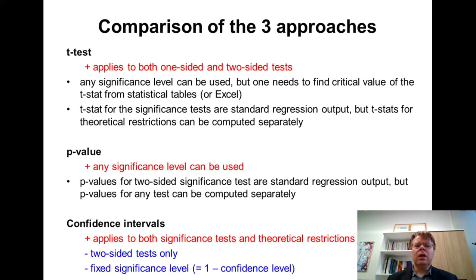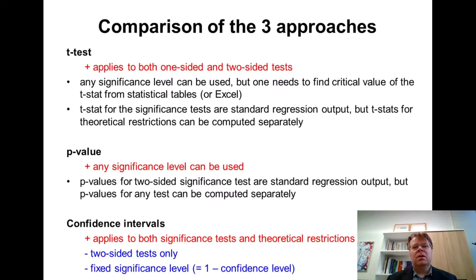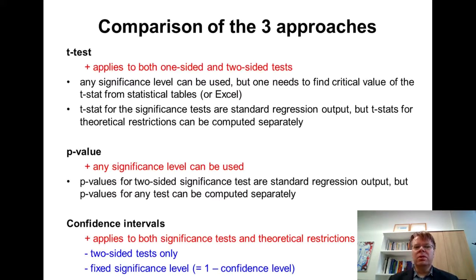Finally, even though confidence intervals are usually used for interval estimation as a measure of error margin in estimates, they can also be used for testing hypotheses — both significance tests and theoretical restrictions — because we directly compare the beta* stated by the null hypothesis and ask whether it is contained in the confidence interval. The only restrictions are that it is limited to two-sided tests, and if we change the confidence level, we need to recalculate the confidence interval. Those are the main downfalls of the confidence interval in hypothesis testing.